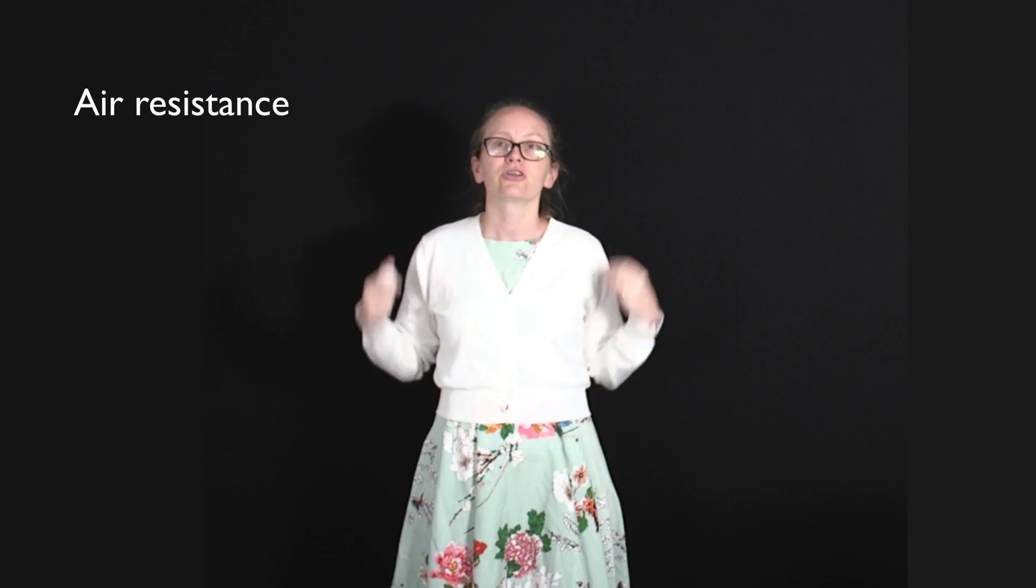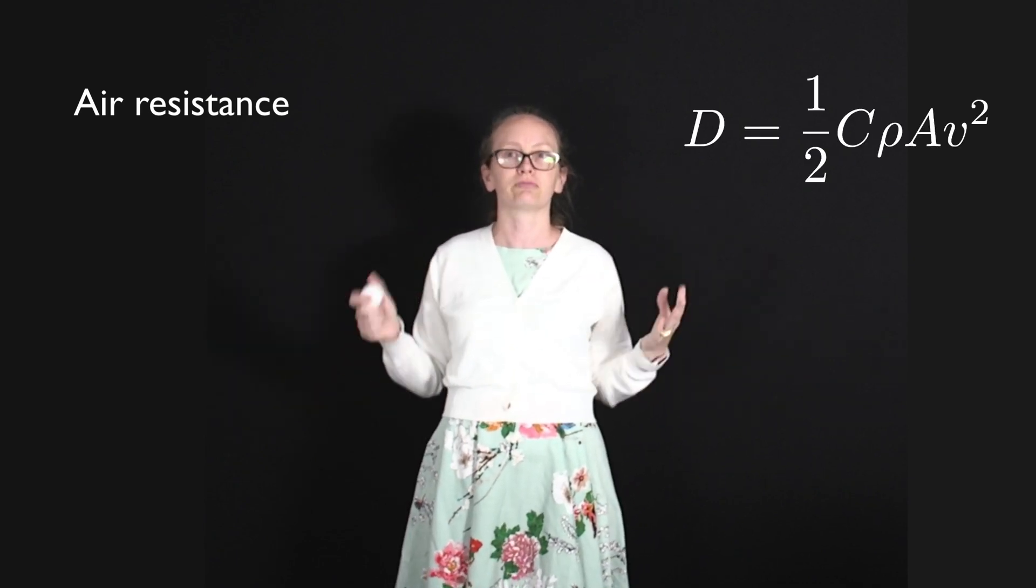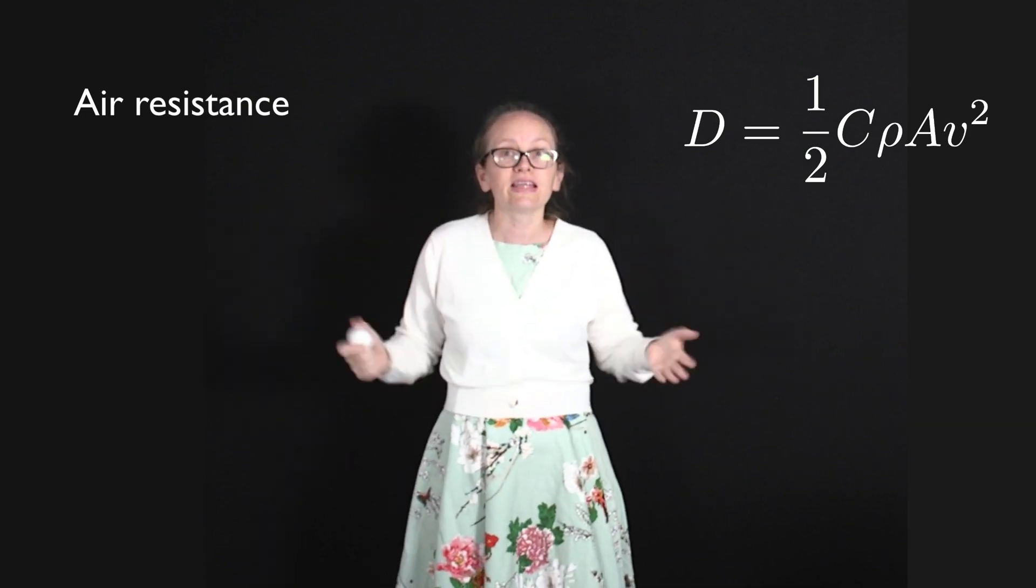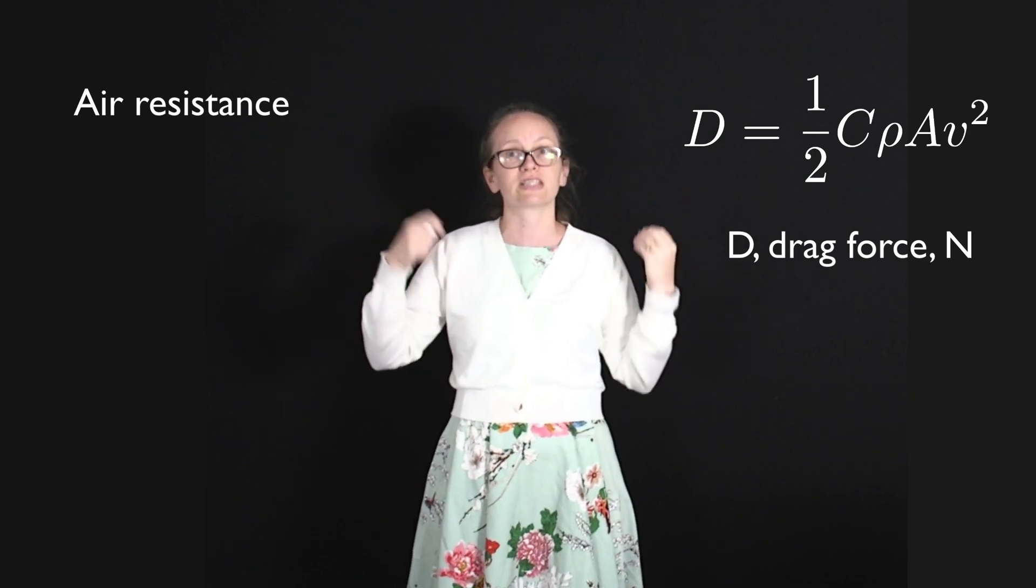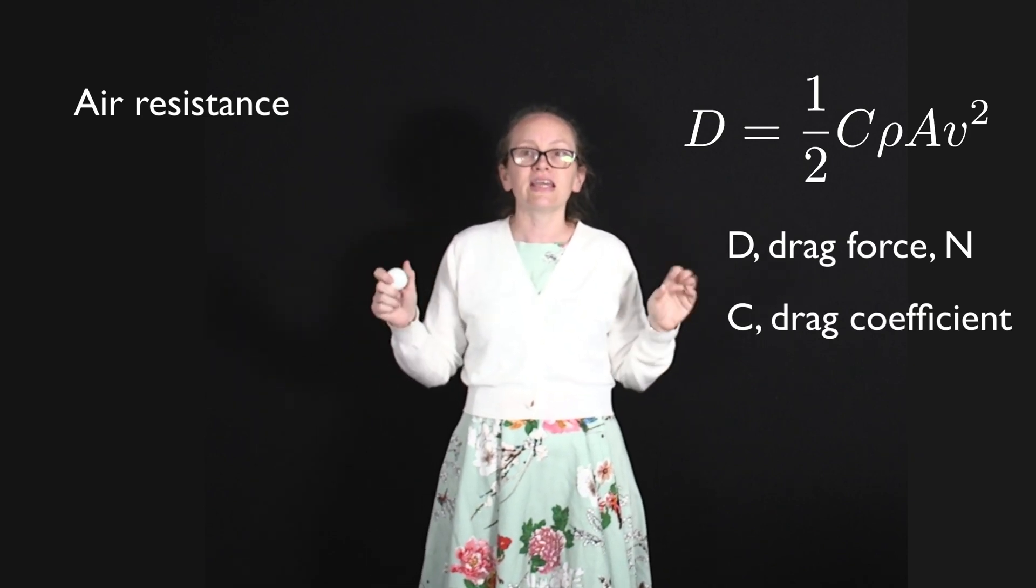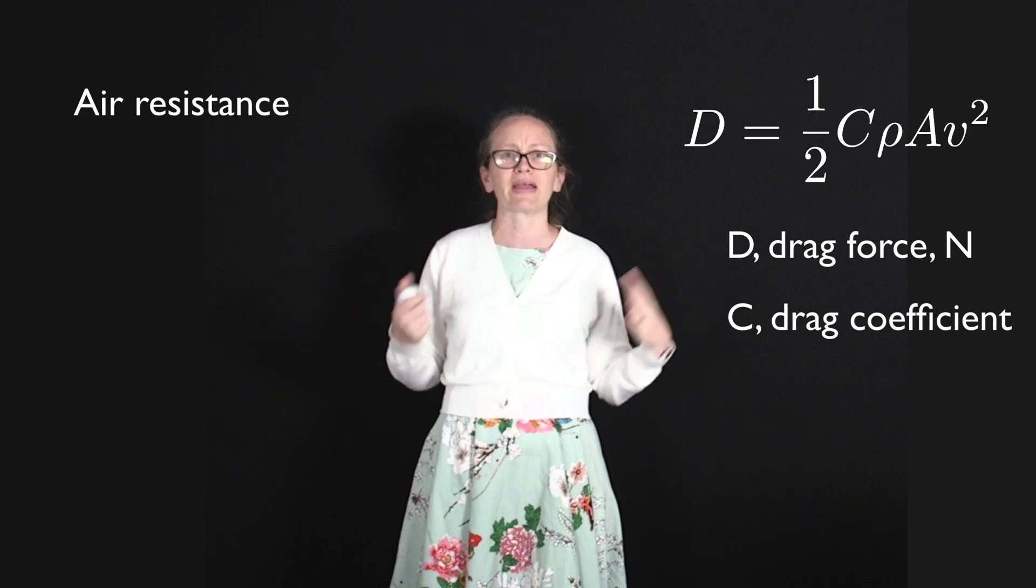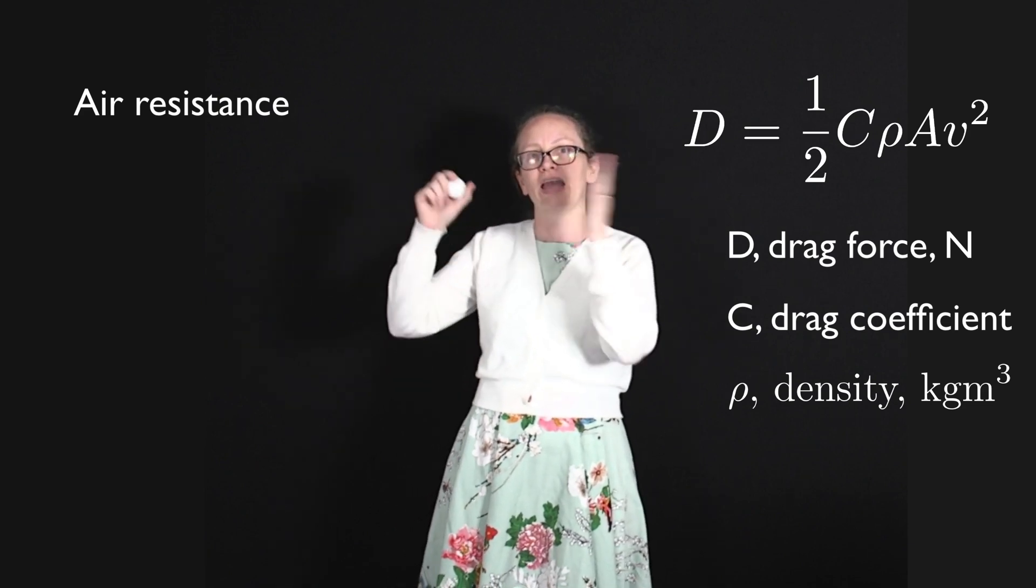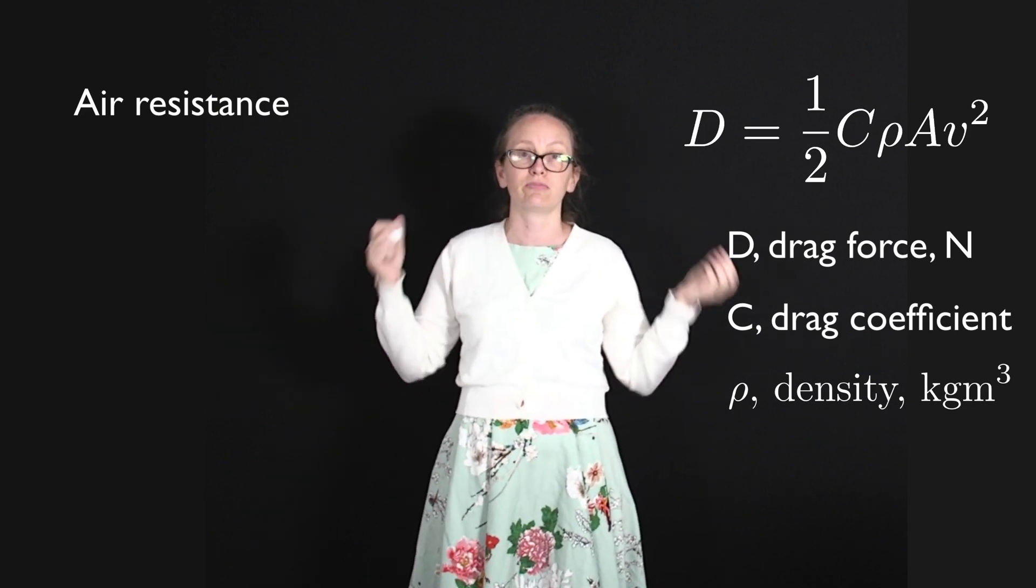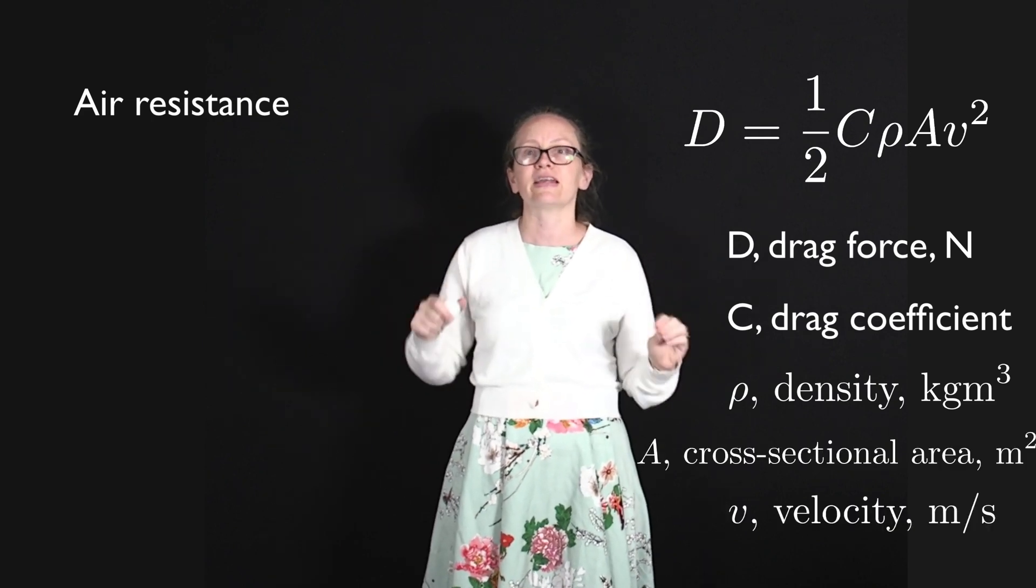So we've actually got an equation that we can use to model air resistance. We can write this equation as D equals a half C rho A v squared. Now in this equation, D is the drag force, so it represents the size of the force and it's measured in Newtons. The C is the drag coefficient, which is different for different bodies depending upon their surface. Rho is the density of the air or the fluid through which the object is moving. A is the cross-sectional area and v is the velocity.